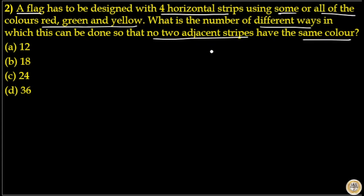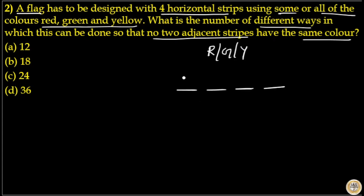Here you can use the multiplication principle concept. You have three colors — red, green, and yellow — and four stripes. In the first stripe you can choose any of these three colors, so you can fill the first stripe in three ways.